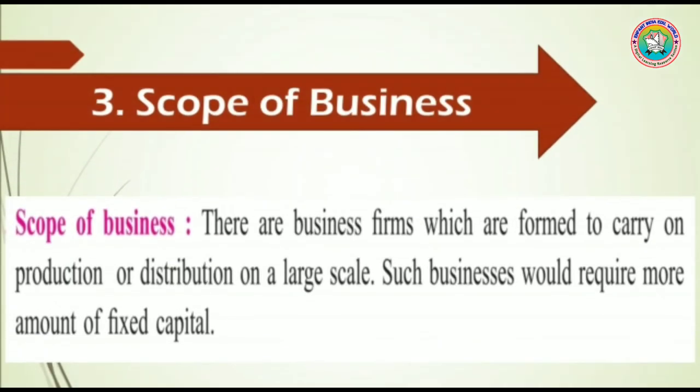Point number three is scope of business. Business firms which are formed to carry on production or distribution on a large scale would require more amount of fixed capital. When the scope of a business is large, that is production or distribution is on a large scale, they need more fixed capital because to produce more they need more and more machineries.